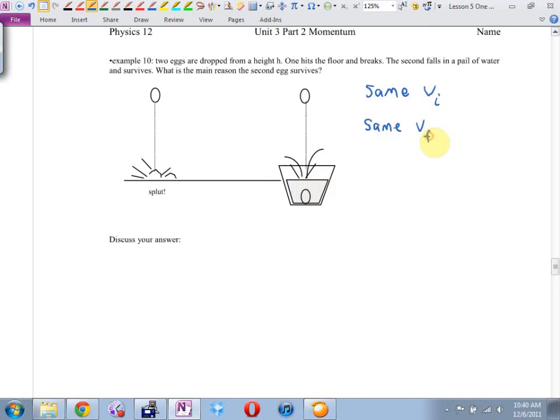Yes? I think this means, therefore, they each go through the same impulse. They both go through the same change of momentum. Why does the egg survive then? If they both go through the same momentum, why does the same change of momentum, why does the egg that lands in the pail survive? Shouldn't it also crack?